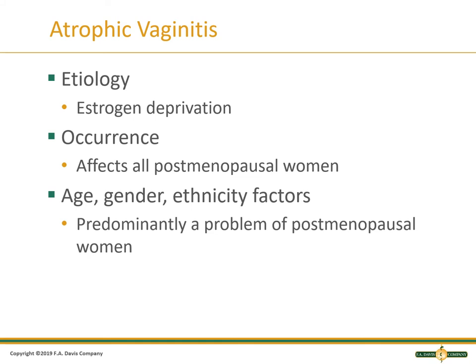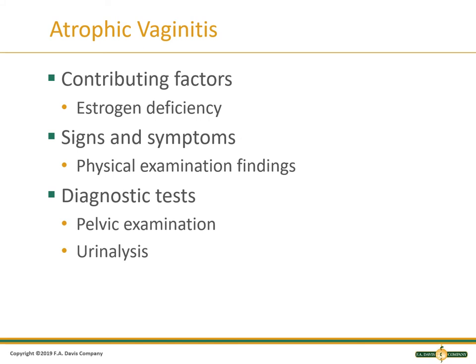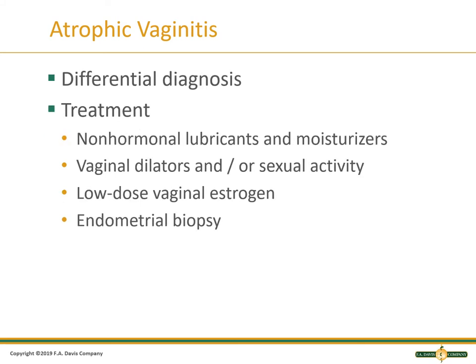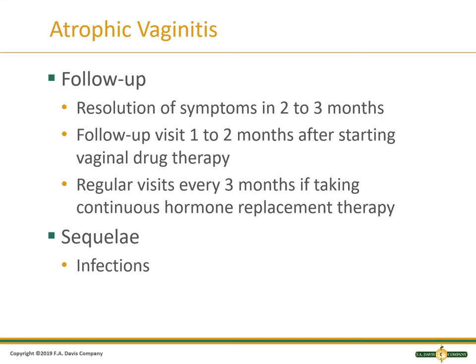You also have to look at the social aspect and dynamics. Contributing factors include estrogen deficiency. We look at physical exam findings, do a pelvic exam, check their urine to make sure we're not missing anything on the urinalysis. Do they have a urinary tract infection? When looking at the differential diagnosis and treatment plan, non-hormonal lubricants and moisturizers help restore the vaginal wall. Vaginal dilators and sexual activity also come into play. Low-dose vaginal estrogen and endometrial biopsy can give a definitive diagnosis. Follow up in two to three months.